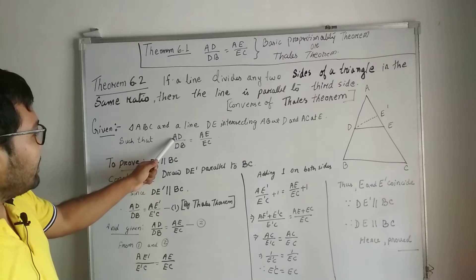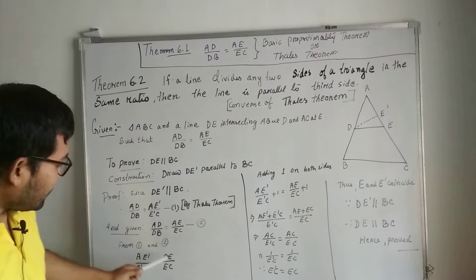And what is given here? We already have given AD by DB equal to AE by EC. This is also given.